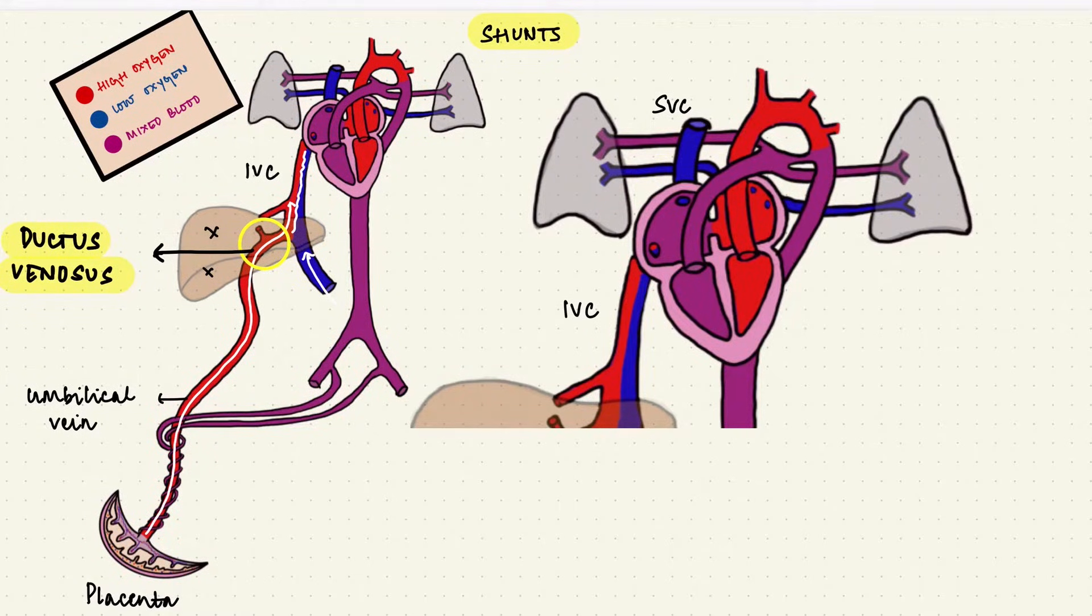The blood enters the right atrium from the IVC. There's a valve of the IVC called the eustachian valve at the junction with the right atrium and that directs the more oxygenated blood towards the second shunt, the foramen ovale. This is an opening in the atrial septum so that blood can reach the left atrium. The rest of the deoxygenated blood coming from the head end of the fetus through the superior vena cava and from the lower half of the body and portal circulation through the IVC, they go through the tricuspid valve into the right ventricle.